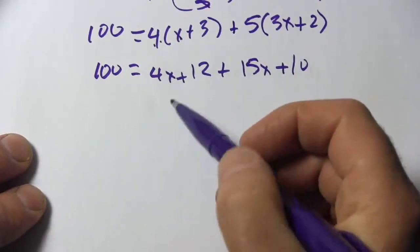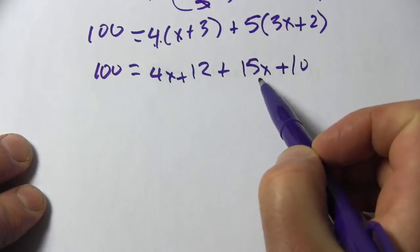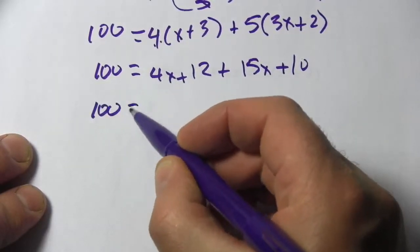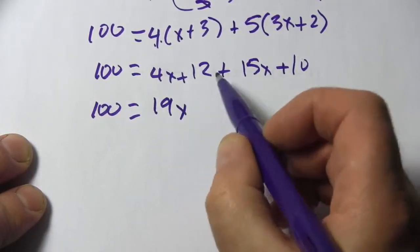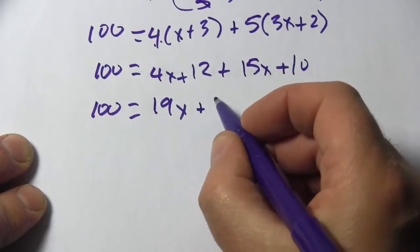And now we have some like terms to combine. We've got 4x and 15x, so that's 19x. And 12 and 10 is 22.